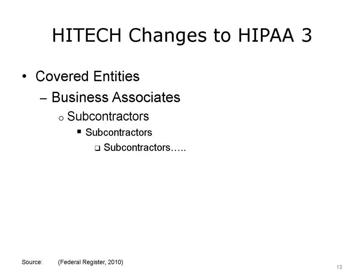When the final rule came out in January of 2013, it said that HIPAA will apply directly not only to a covered entity's business associates, but to the business associates' subcontractors and the subcontractors' subcontractors and so on, all the way down the line.